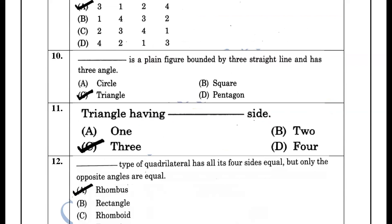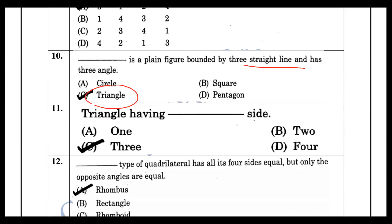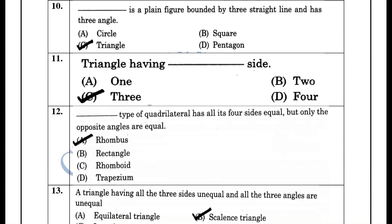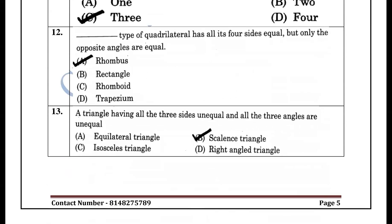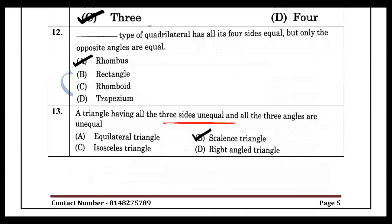If there are three sides, we call it a triangle. A triangle has three sides, three angles, and three lines. In an equilateral triangle, all three sides are equal, all three angles are equal. The sum of the three angles — theta1 + theta2 + theta3 — equals 180 degrees.